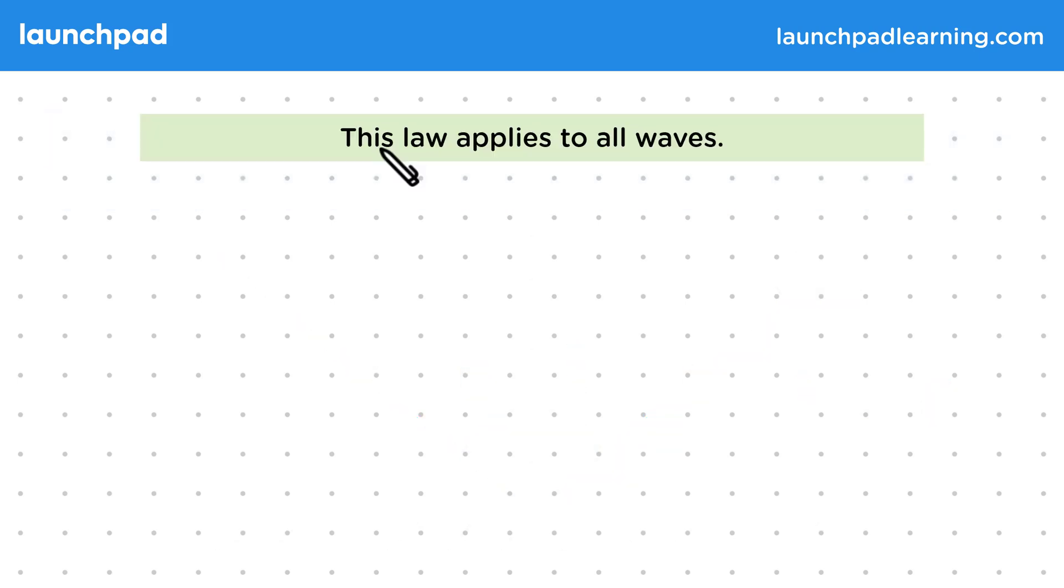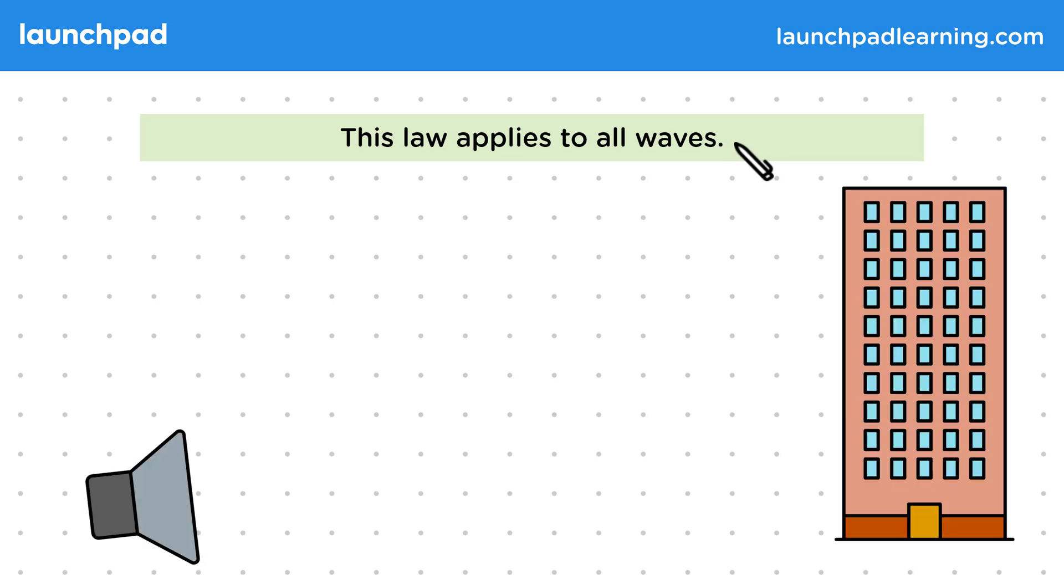Well actually, this law applies to all waves. Let's look at a common example of a sound wave reflecting off a building. This type of reflection is called echoing, which is a word you may be asked to recall in your exam.